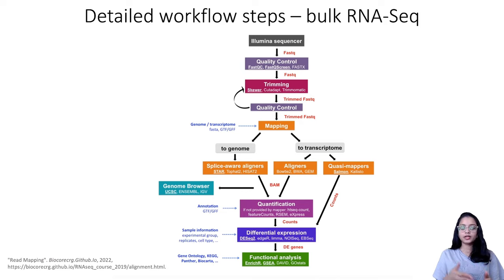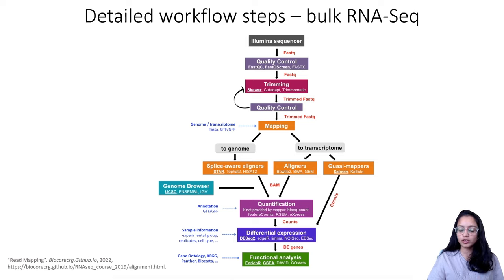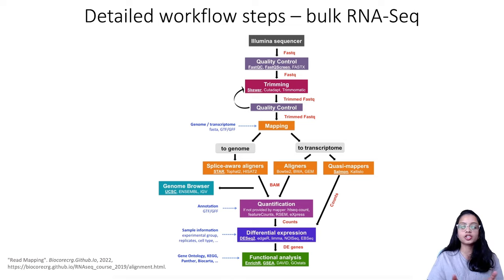Once you have trimmed the reads, you perform quality control again to ensure reads are of good quality and all poor-quality bases or adapter sequences have been removed. Once we have good-quality data, we proceed to mapping. At this stage, reads can either be mapped to a genome or to a transcriptome. When mapping reads to a genome, one should use a splice-aware aligner — commonly STAR, TopHat2, and HISAT2.